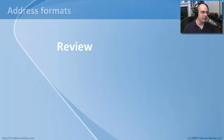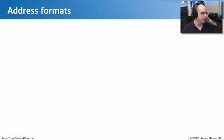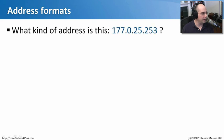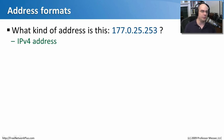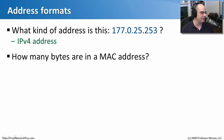Let's review what we've learned about address formats. First question: what kind of address is '177.0.25.253'? It looks very similar to an IPv4 address — and indeed it is.